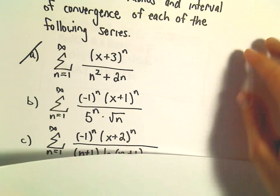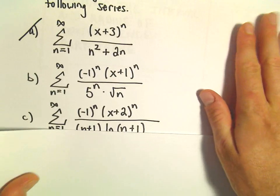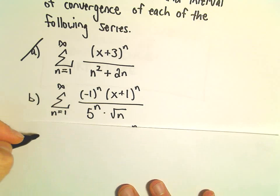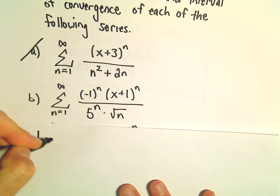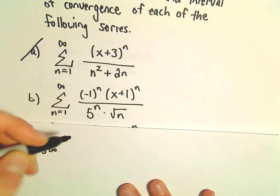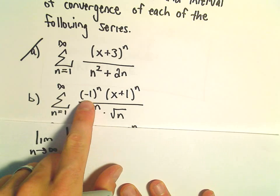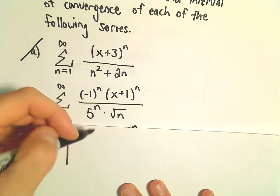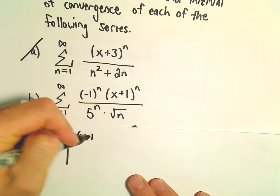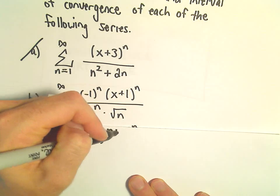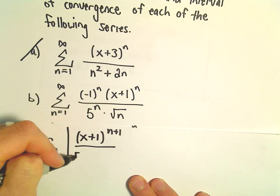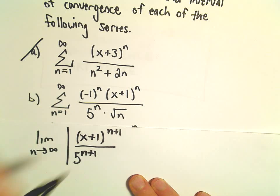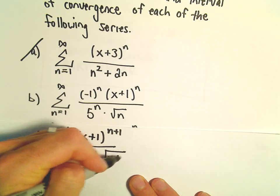We'll just use the ratio test here. So we'll take the limit as n goes to infinity. When we put this in absolute value, the negative 1 to the n we can just get rid of. So we'll have x plus 1 to the n plus 1 power over 5 to the n plus 1 power, and then the square root of n plus 1.